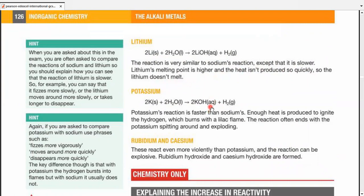In case of potassium, as it is, it has a lower position on the periodic table than sodium, so the reaction is actually faster. Enough heat is produced to ignite the hydrogen, which burns with a lilac flame, a little bit of purple. Lilac is mostly purple. The reaction often ends with potassium spitting around and exploding. Remember, reaction of potassium is going to be more vigorous than sodium. Rubidium and cesium, they react even more violently, even explosively. Rubidium hydroxide and cesium hydroxide are formed.